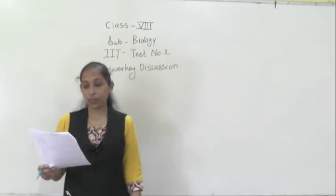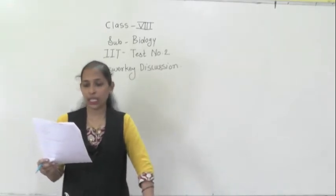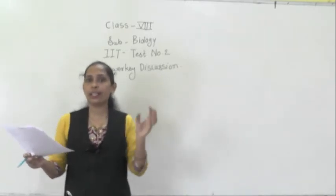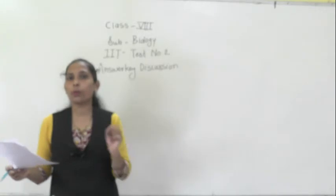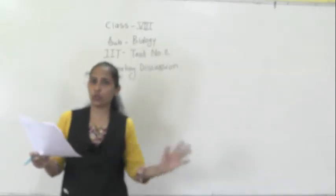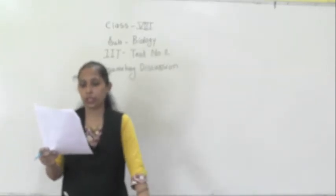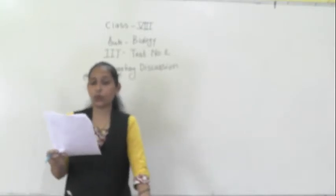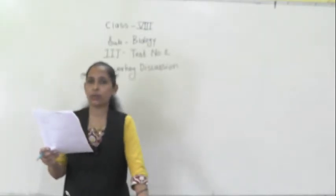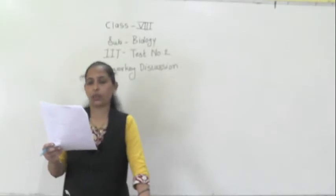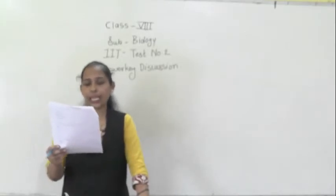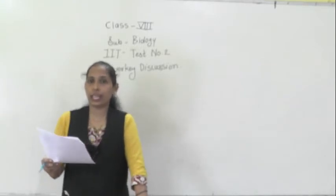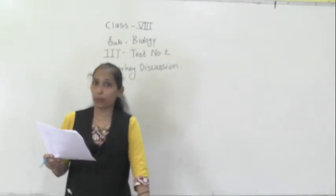Question number eleven: what is meant by tissue? When the same type of cells come together, that group of cells is called a tissue. So option number B is correct — tissue is a group of cells. Question number twelve: which cells are capable of changing shape?